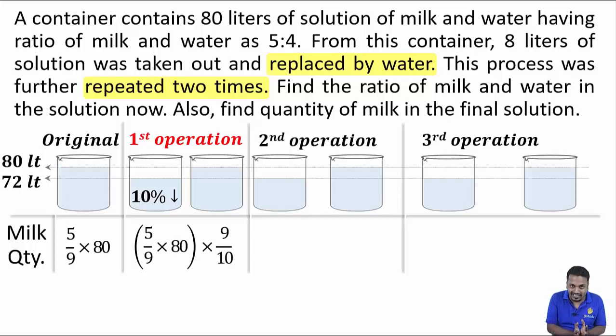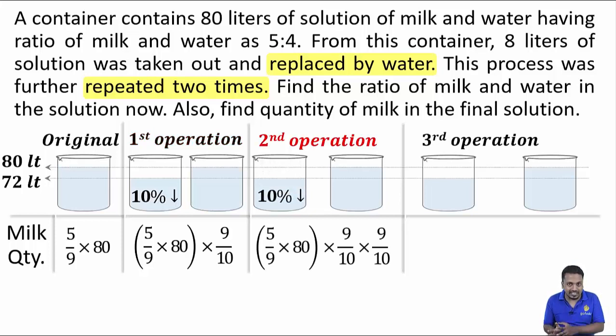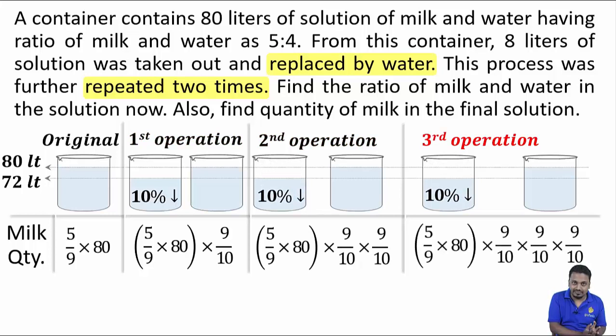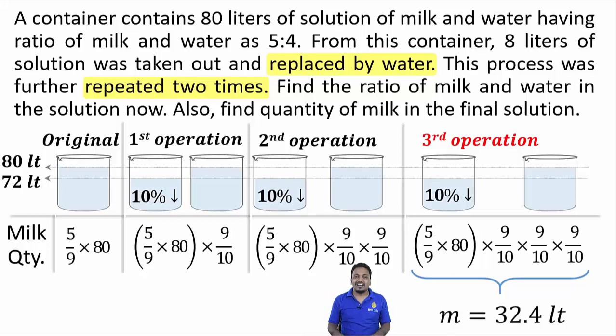So, this milk quantity when decreased by 10% every time will bring a multiplication factor of 9/10 every time. And this process done thrice will give 32.4 liters as the answer.